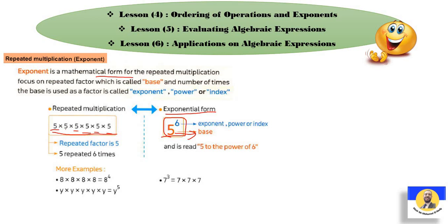8 × 8 × 8 × 8 equals 8 to the Power 4 أو 8 to the Exponent 4. طيب 7 to the Exponent 3 معناه 7 × 7 × 7. لو y × y × y × y × y، نشوف الـy Repeated How Many Times — it's repeated 5 times.